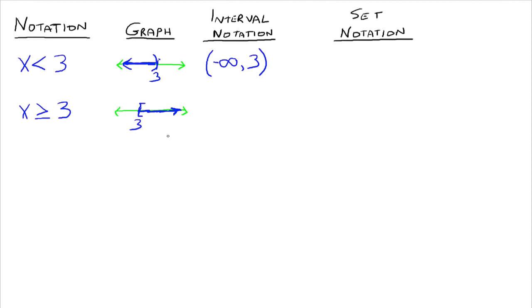For the second example, the smallest number is 3 and it goes out to positive infinity. Since 3 is included, we put a bracket; since infinity is not included, we put a parenthesis. So the interval notation is [3, ∞). These two interval notations represent both the graph and the algebraic notation. This is called interval notation.